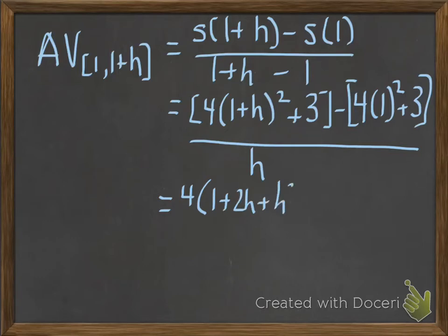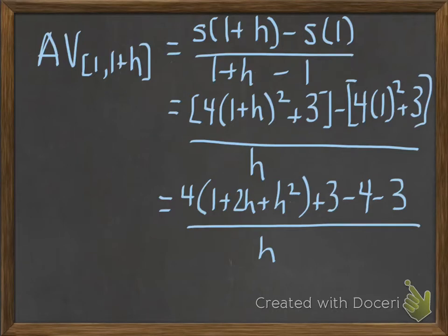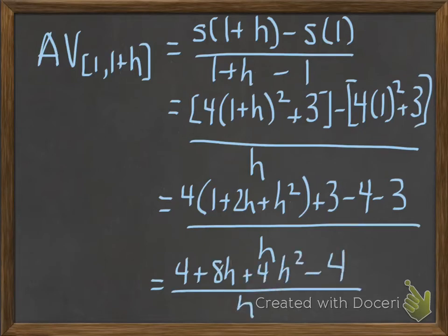So I will use FOIL to expand out (1+h)², and I get 4 times (1 + 2h + h²) plus 3 minus 4 minus 3. That minus sign distributes through that whole second expression, all divided by h. Now that plus 3 minus 3 cancels, I multiply the 4 through, and I get 4 plus 8h plus 4h² minus 4 divided by h. I have a plus 4 minus 4, so those add to 0.